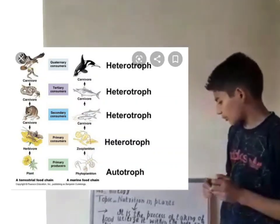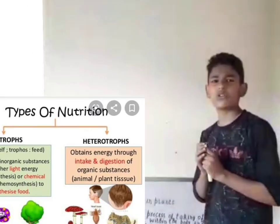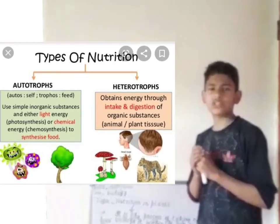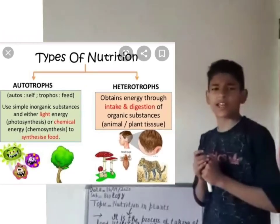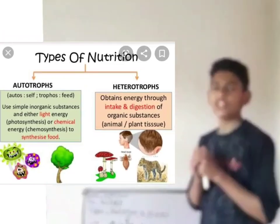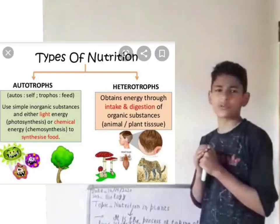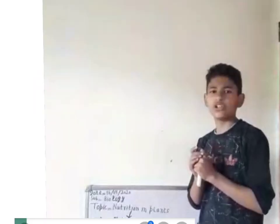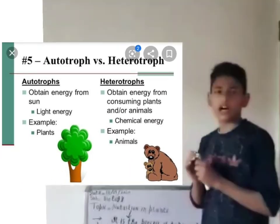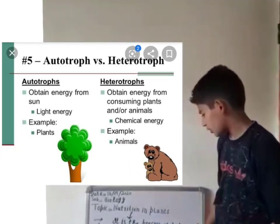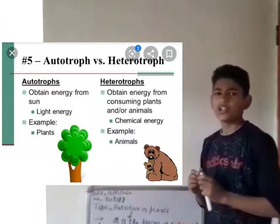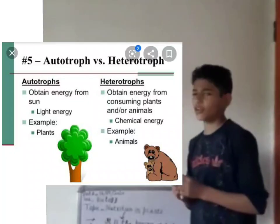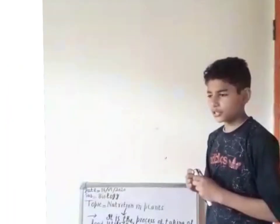If we talk about heterotrophic nutrition, not only we humans are heterotrophs but some plants are also heterotrophs. Examples of some plants are parasitic plants and saprophytic plants. These plants lack green pigment chlorophyll in their cells and they cannot manufacture their own food, so they depend upon other plants or dead, decaying organic matter for their nourishment.